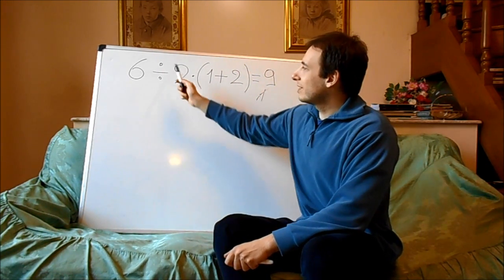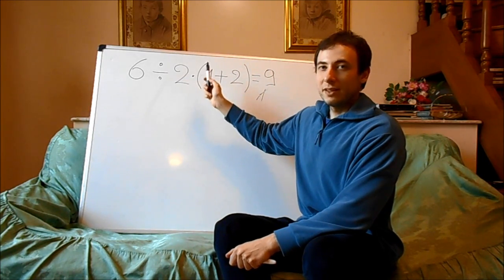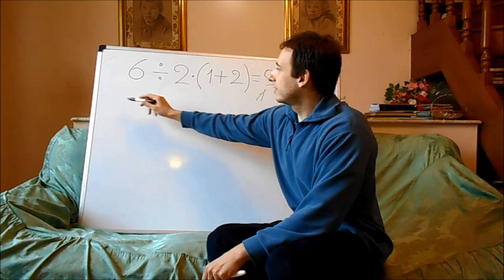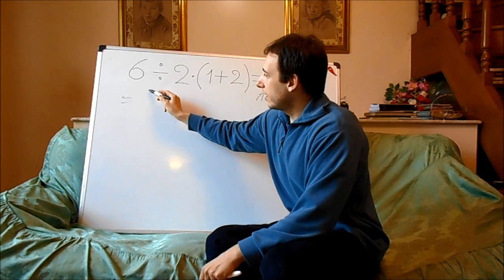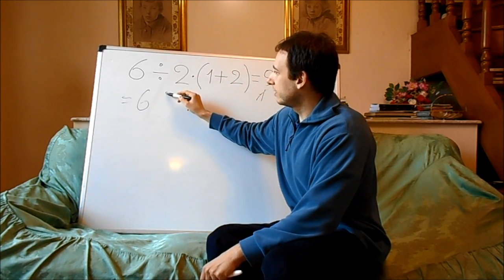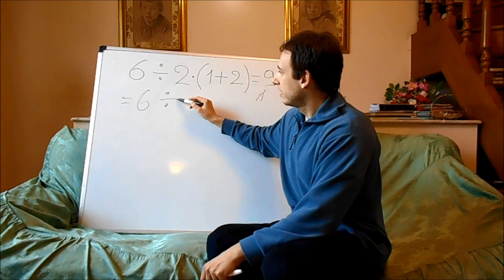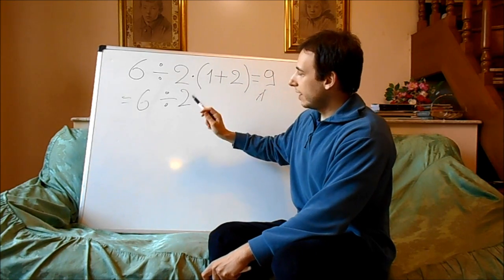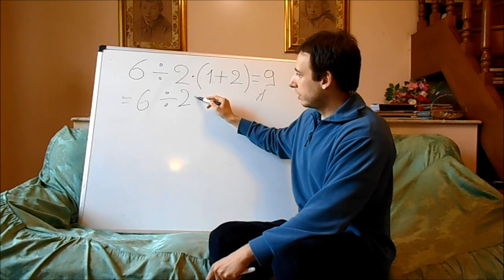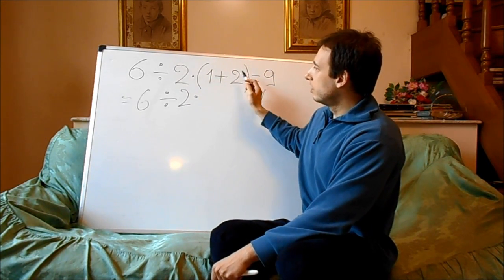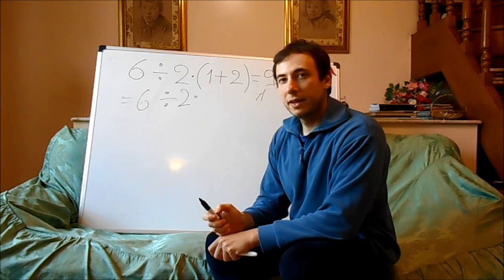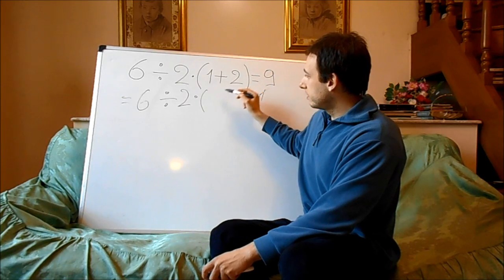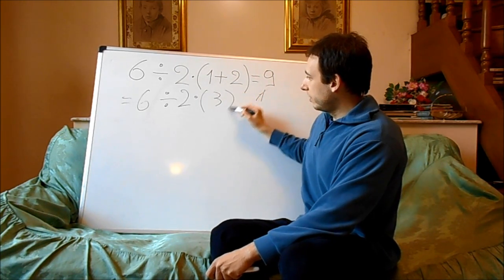So the division is on the left and the multiplication is on the right. Then we have to rewrite this expression as 6 divided by 2, then multiplication, and we have to respect the higher priority of the brackets, so in the parentheses we will get 3.